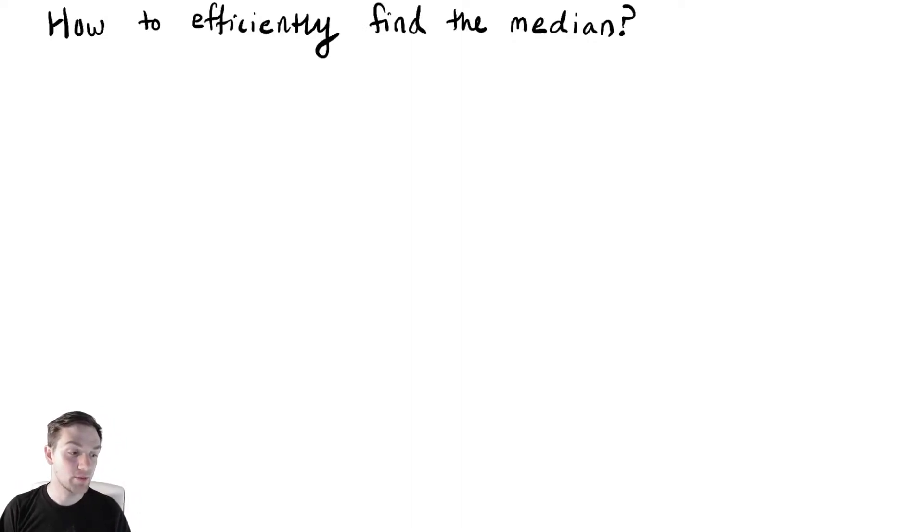We'll begin by talking about probably the way that you would most likely do this when you first learned about what the median is in statistics. The sort of naive approach is to first sort the array and then access A[n/2].